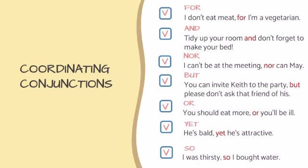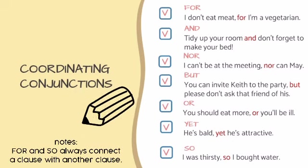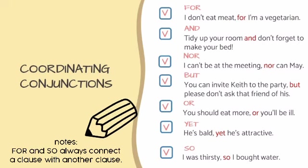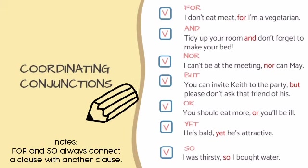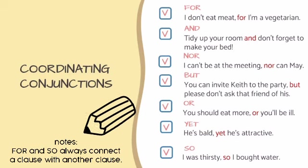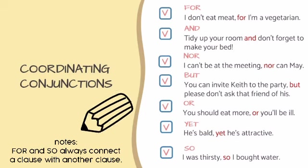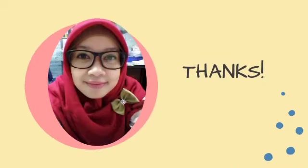To wrap up: the conjunctions 'and,' 'nor,' 'but,' 'or,' and 'yet' can sometimes connect words with words or phrases with phrases — they are not always used to connect clauses. Meanwhile, 'for' and 'so' are always used to connect a clause with another clause. That's all for conjunction and coordinating conjunctions. Thank you for watching, see you in the next video. Assalamualaikum warahmatullahi wabarakatuh.